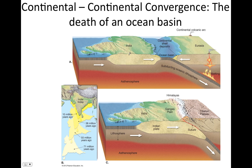The third type of convergent plate boundary is continental-continental convergence, and this is also the death of ocean basins. In this example, India used to be separate from Eurasia with an ocean basin between them. As India moved north, the oceanic lithosphere under that ocean basin was subducting under the Eurasian continental lithosphere — there was a trench, volcanism, and all the features of a subduction zone. Eventually all that oceanic lithosphere subducted, and the continental lithosphere of India began to converge with Eurasia. Since continental lithosphere is too buoyant to sink, there is massive crustal deformation producing very large mountain ranges — that is how the Himalayas formed.